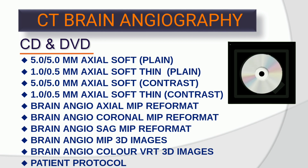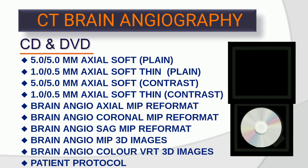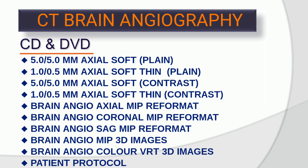For DVD you can give both thick and thin data: 5x5 mm axial soft plane, 1x0.5 mm axial soft thin plane, 5x5 mm axial soft contrast, 1x0.5 mm axial soft thin contrast, brain angio axial MIP reformat, brain angio coronal MIP reformat, brain angio sagittal MIP reformat, brain angio MIP 3D images, brain angio color VRT 3D images, and patient protocol.